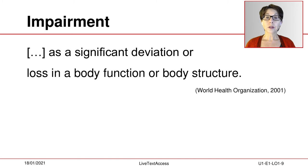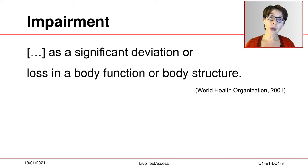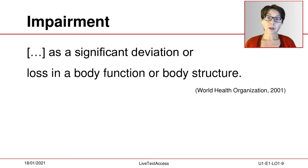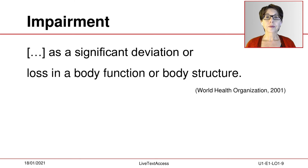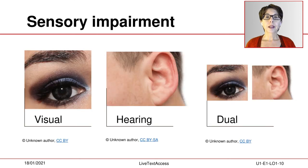According to this classification provided by the World Health Organization, such a loss or deviation can be sensory, physical, cognitive, or related to speech and language. These are the terms that we often use to label a type of disability. Let's take a look at them.